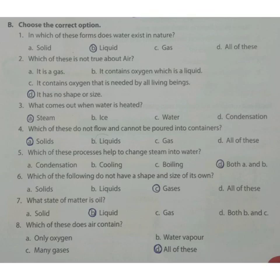Question 5: Which of these processes help to change steam into water? Option A: Condensation. Option B: Cooling. Option C: Boiling. Option D: Both A and B. The answer is D — Both A and B.